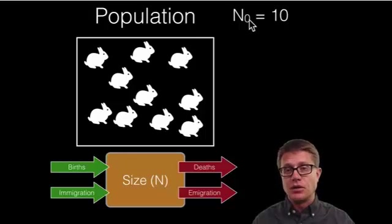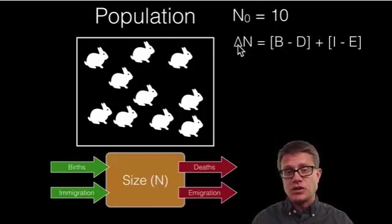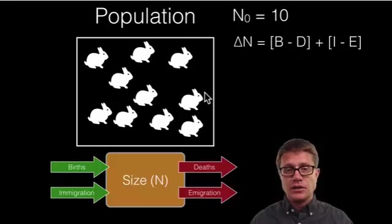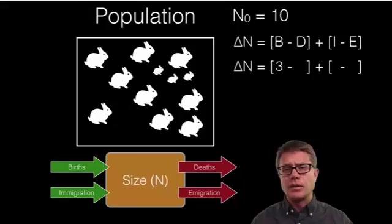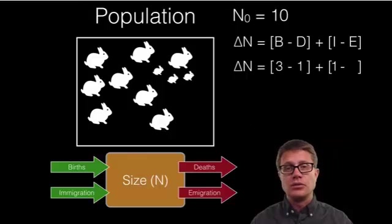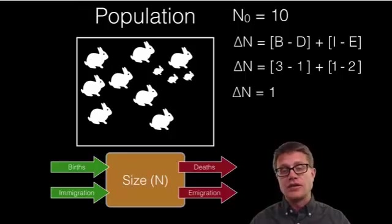Let's say we have a population of 10, so our N naught is 10—that's our initial population. The change in N is going to be the births minus the deaths plus the immigration minus the emigration. This rabbit gave birth to three other rabbits, so our births is 3. One rabbit died, so we put a 1 in deaths. How many immigrate? Looks like just 1. And how many emigrate? Looks like 2 left. So the delta N is simply 3 minus 1 plus 1 minus 2, or 1. We've seen an increase of 1.